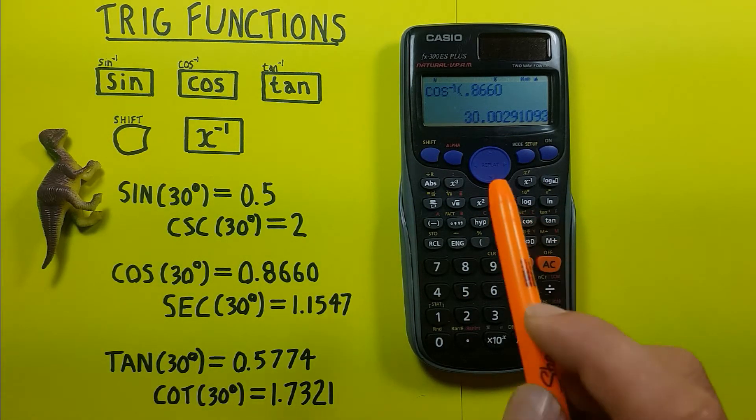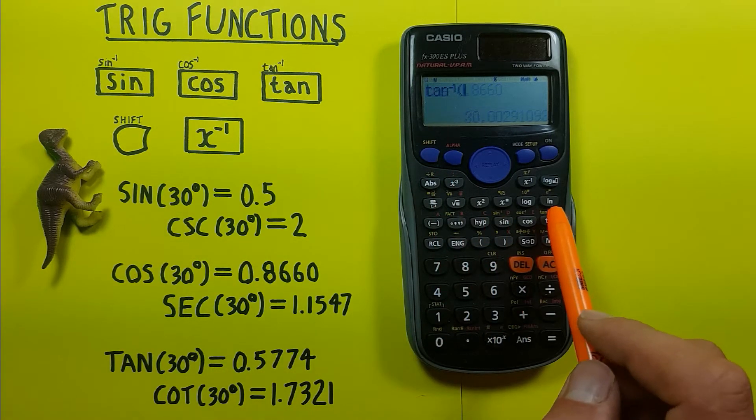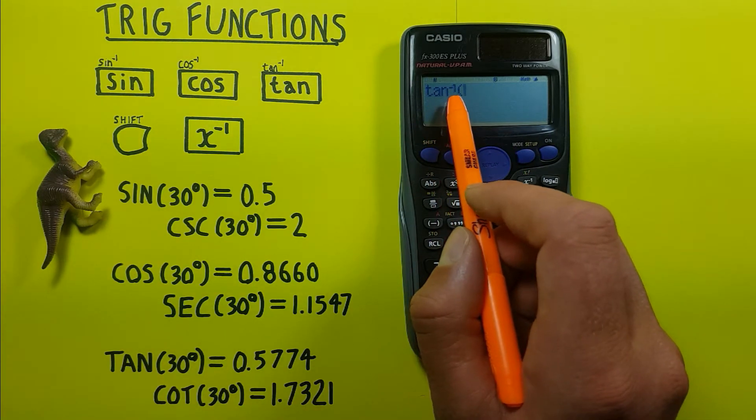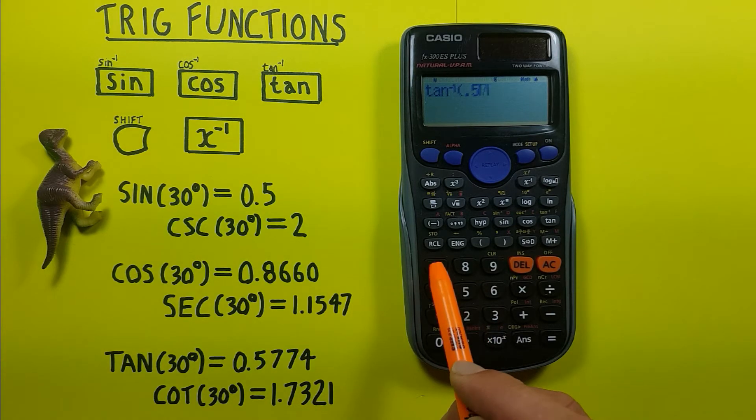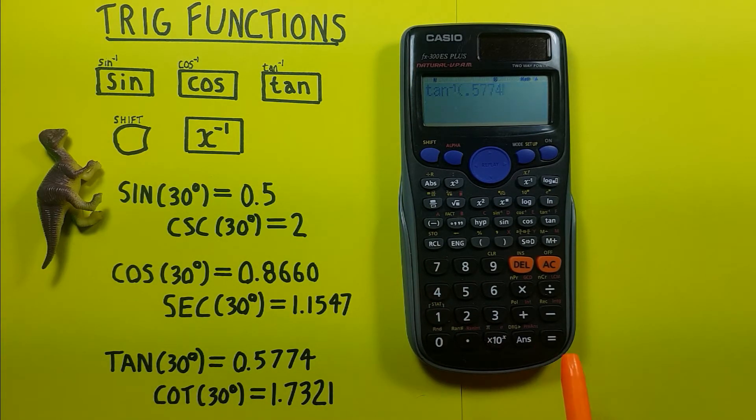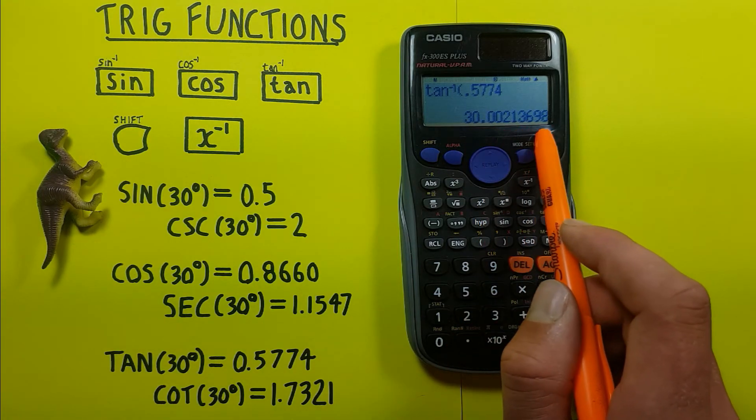And again we can do this with tan by pressing shift tan. There's our tan to the power of minus 1. For this one we got 0.5774 rounded, so we enter 0.5774, press equals, and again we see we get what would round to 30 degrees.